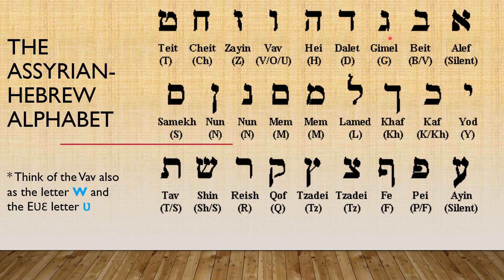Alesh, Beth, Gimel, Dalet, He, Vav, Sein, Chet, Tet, Yod, Kaf — this is the final form of Kaf — Lamed, Mem, final form of Mem. Nuh, Samik, Ain, Pei or Fei, final form of Pei or Fei. Tadi, final form of Tadi. Kof, Resh, Shin or Sin and Tav.